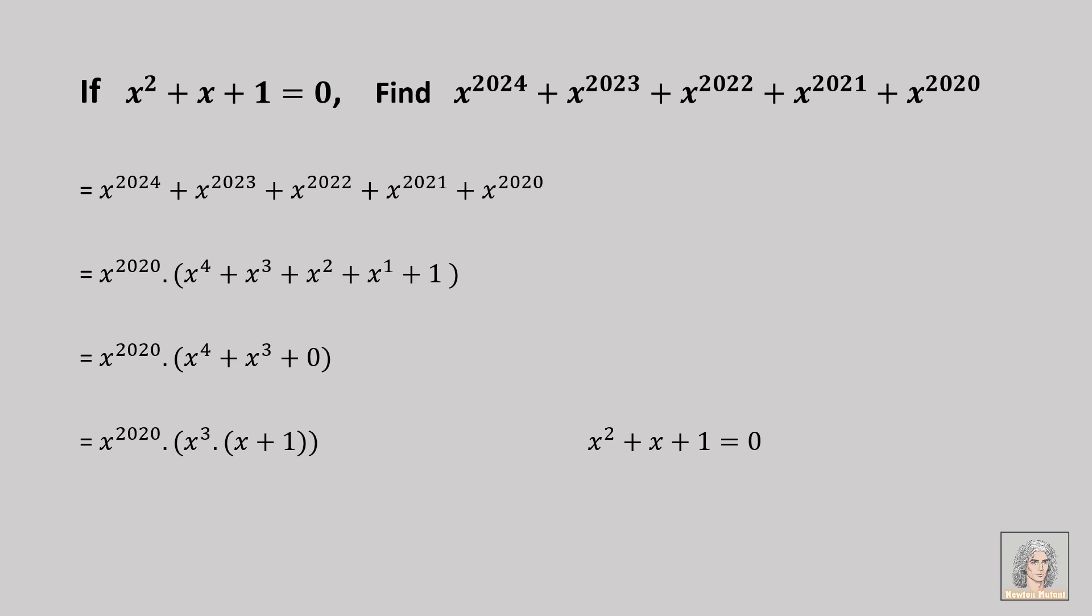Rearranging the terms, we can get that x plus 1 is equal to minus x squared. Let's plug that result in our expression in place of x plus 1. And now, the expression becomes minus x to the power 2025, an interesting result which wasn't hard to arrive at.